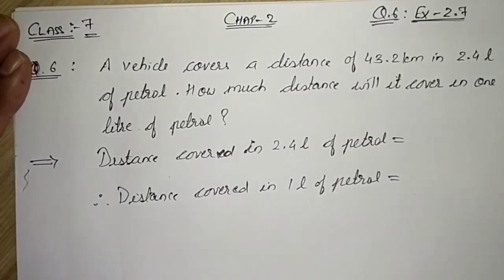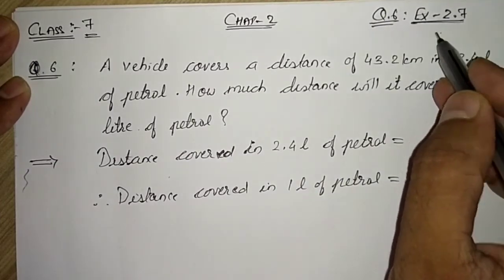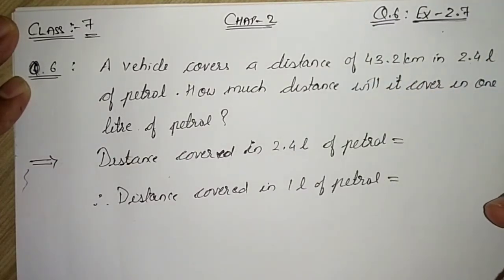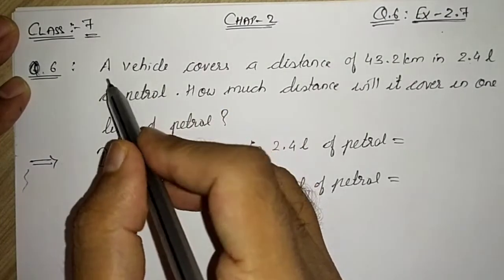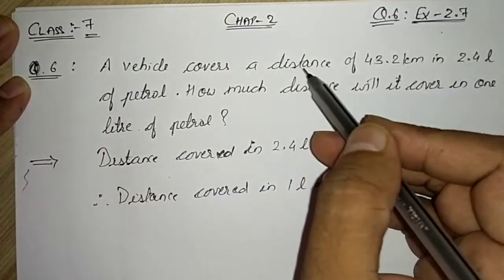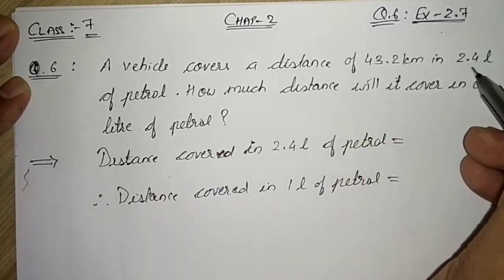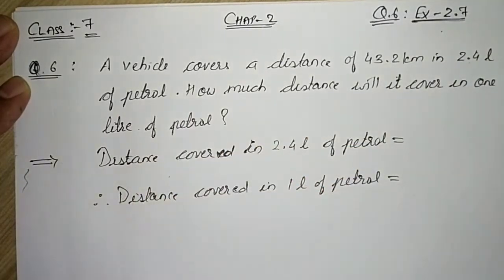Good morning students, today we are going to start question number 6 of exercise 2.7 of chapter 2, fractions and decimals. Question number 6 says: a vehicle covers a distance of 43.2 kilometers in 2.4 liters of petrol.